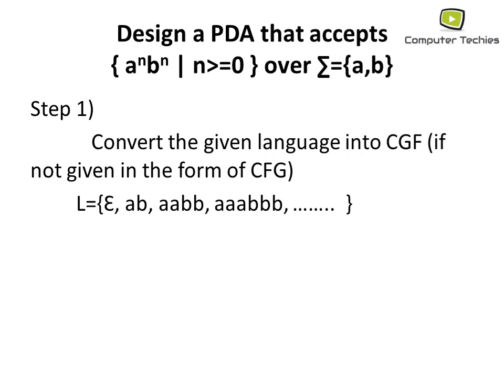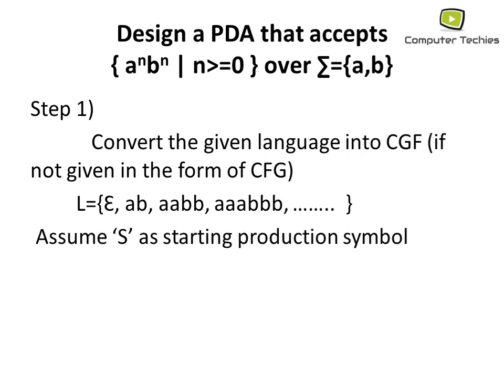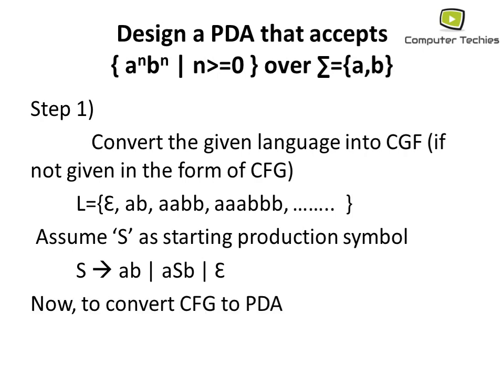Now assume S as the starting production symbol. With the help of that we can write production rules as: S → ab | aSb | ε. We have now converted the given language into context free grammar. This is the form of context free grammar. Now we see how to convert this CFG into a PDA.